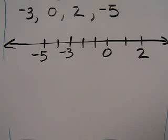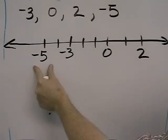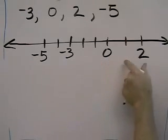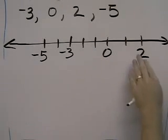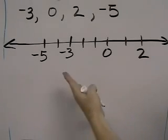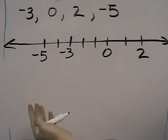So now we know the order. Negative five is the smallest number, negative three is the next smallest number, zero, and then two is the greatest number. So two is the largest, negative five is the smallest. Anything to the right on the number line is larger than anything on the left.